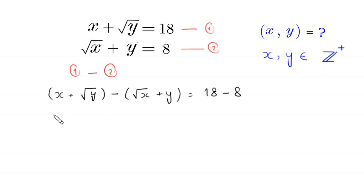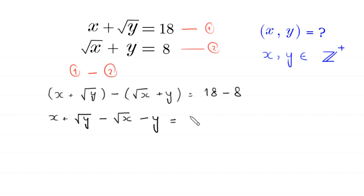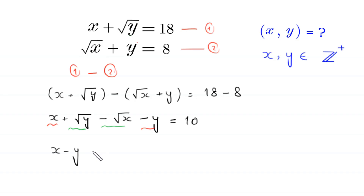We remove brackets. This will become x plus root y minus root x minus y is equal to 10. Now we combine the terms x and negative y, and we combine root y and negative root x. So this becomes x minus y plus root y minus root x is equal to 10.